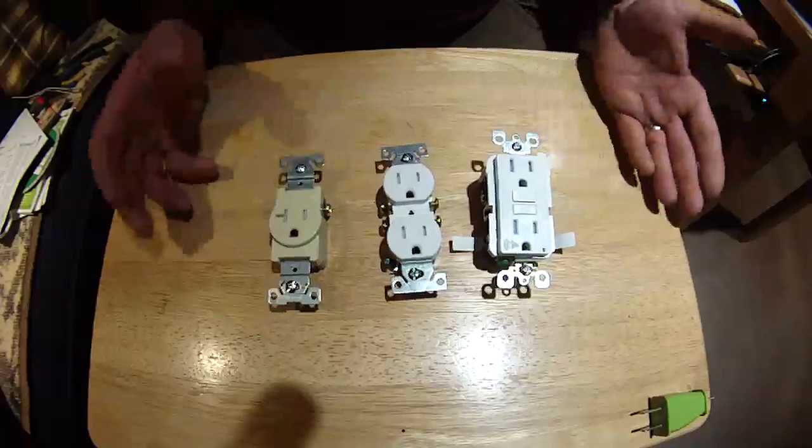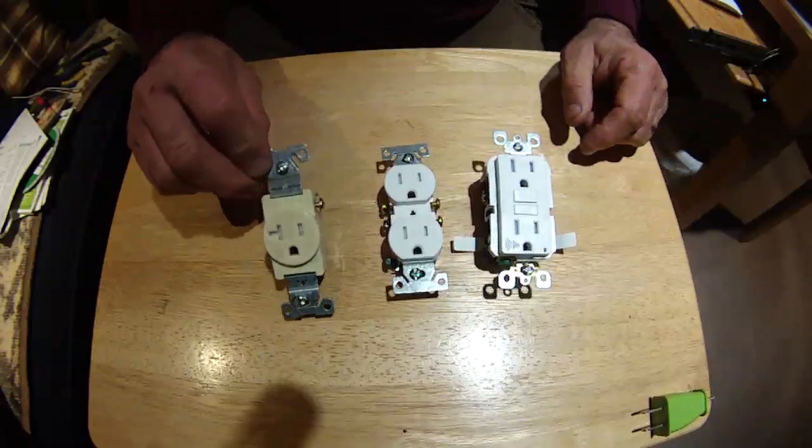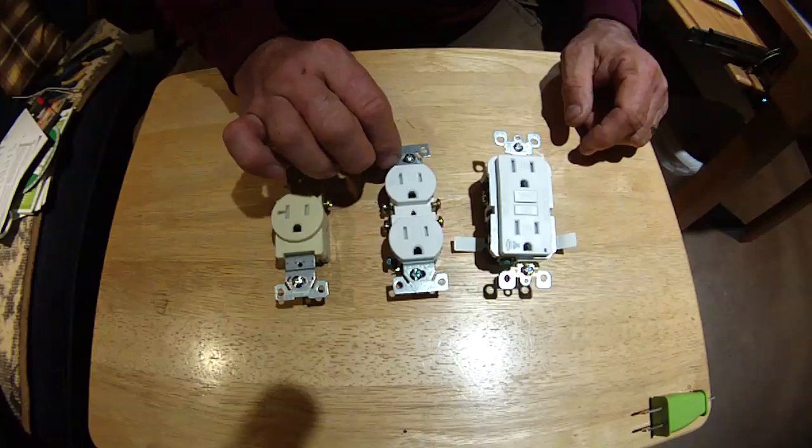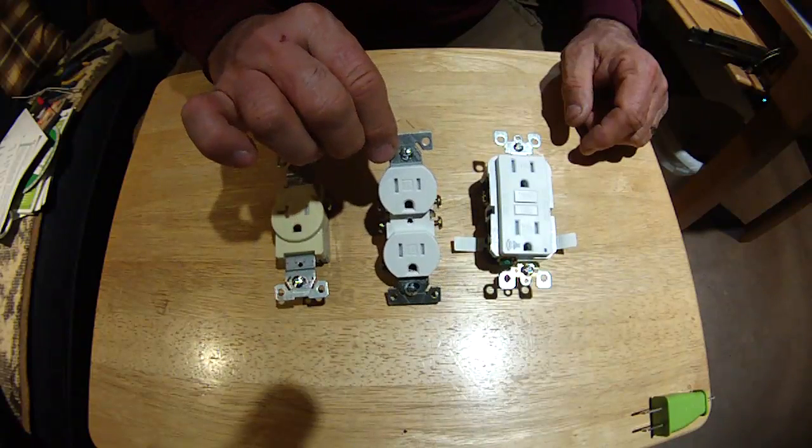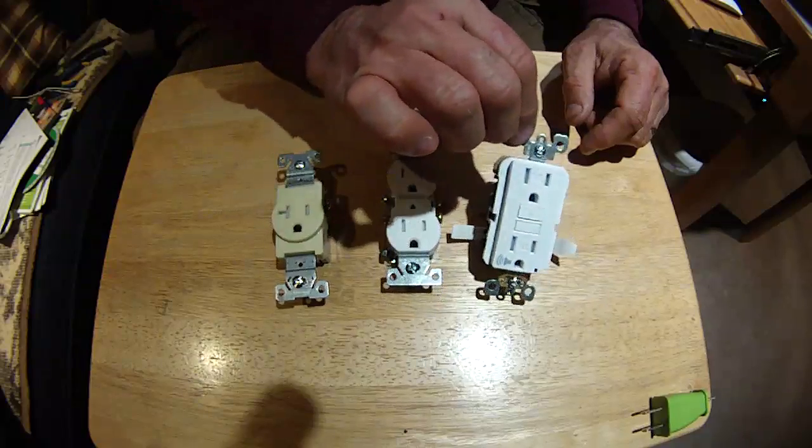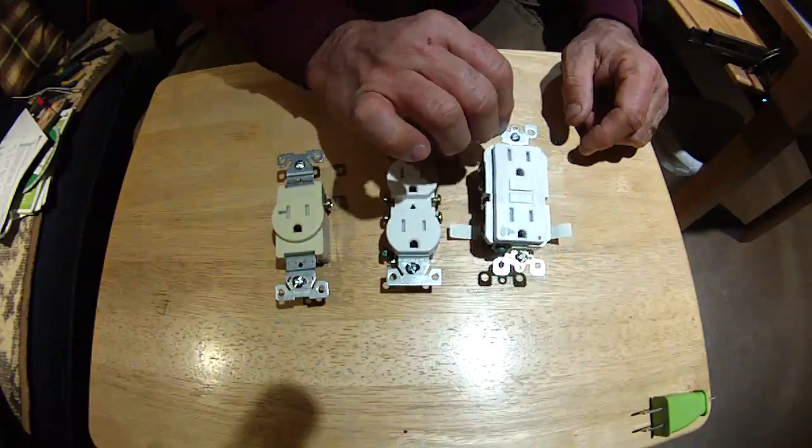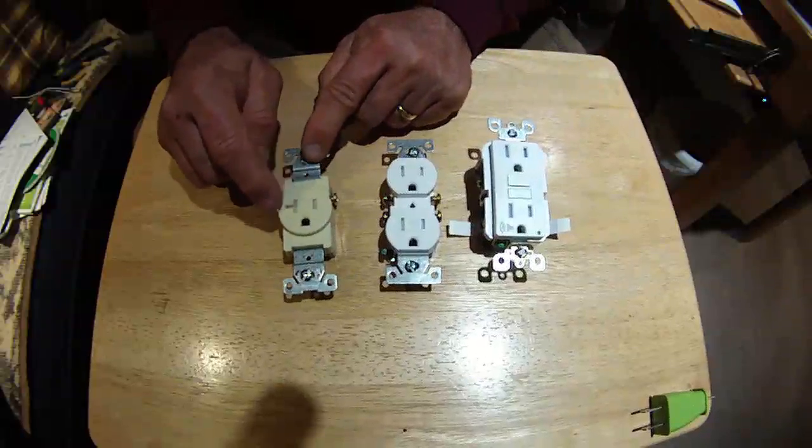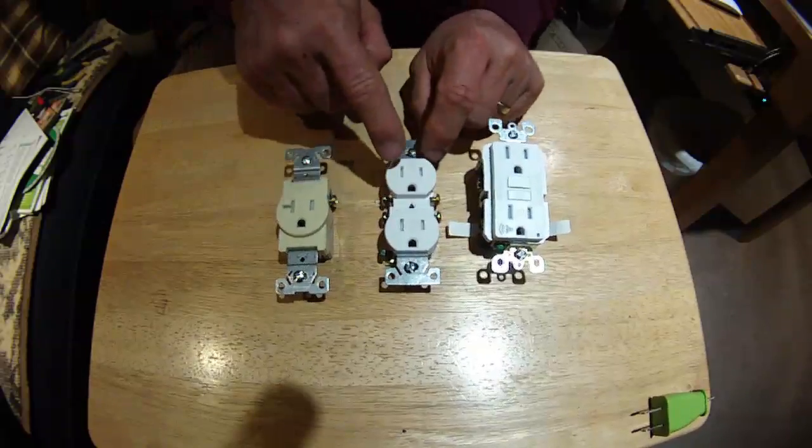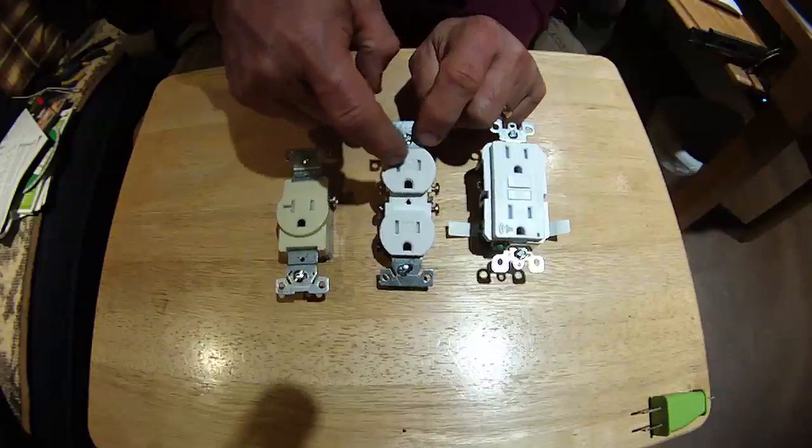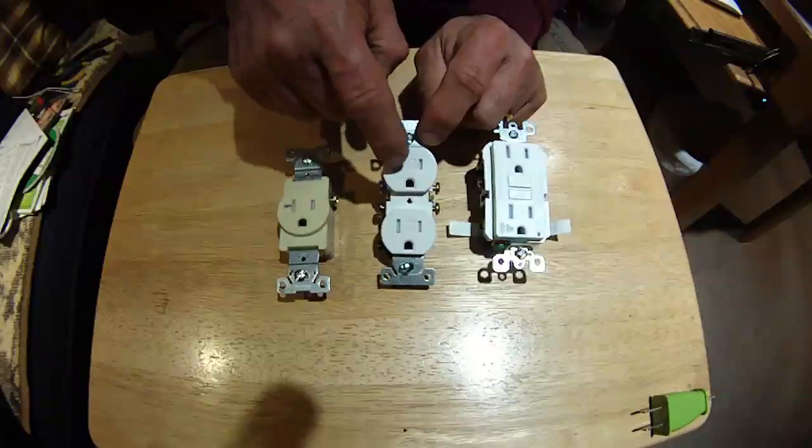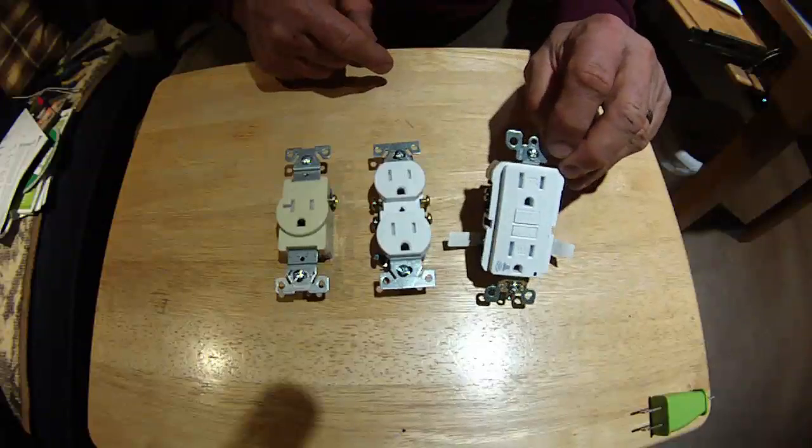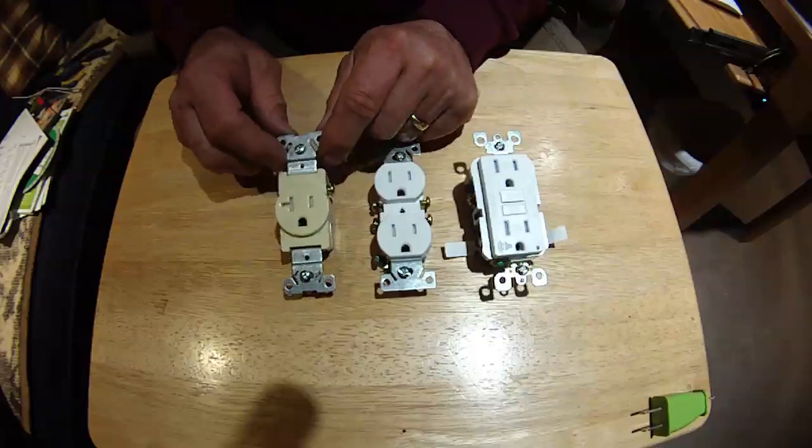Okay, today we're going to talk about receptacles. Here I have a single receptacle, here I have a duplex receptacle, and here I have a GFI receptacle. The single receptacle is a 20 amp - you can tell by the T on the neutral. This duplex is a 15 amp; you can tell because it doesn't have a T. It's got our cute little face we always like, and this is a 15 amp receptacle.